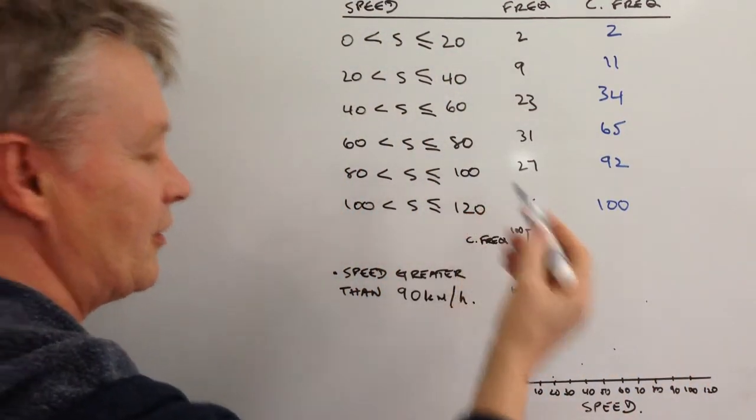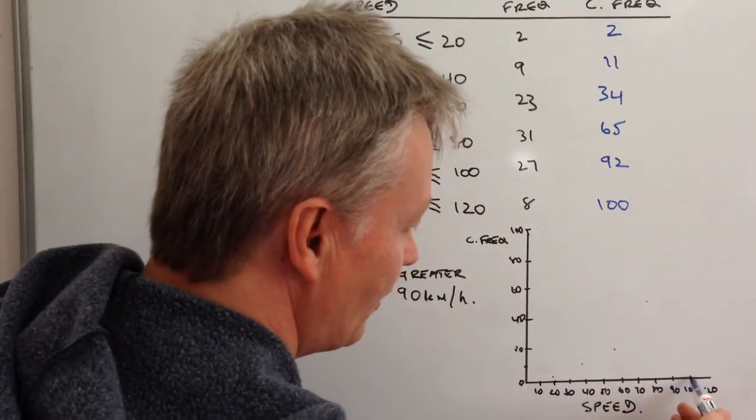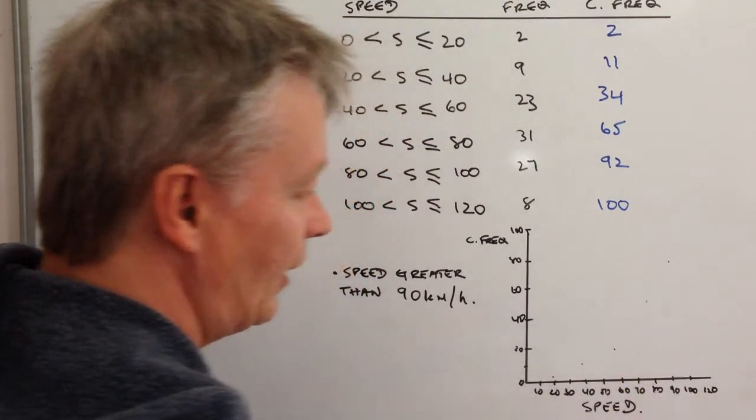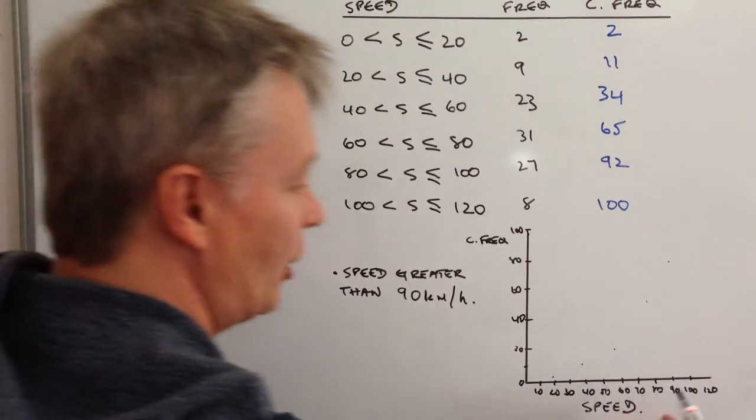And then 92 to a hundred. Well, there's 100 and 92 is up here somewhere. And what we're aiming for is a really nice smooth curve.